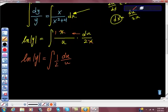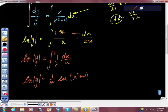So hopefully we can agree on this now, that we really have ln of absolute y is equal to 1 half ln of u, and u, of course, was x squared plus 4. Wow, what a pain in the neck that was, wasn't it?